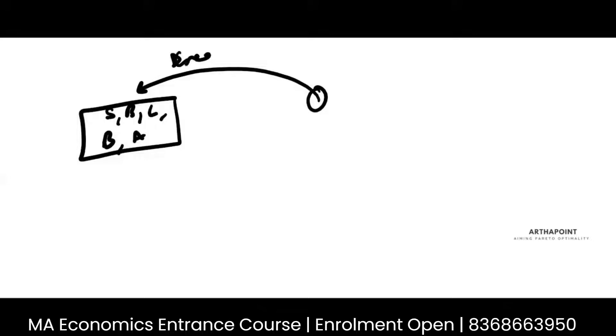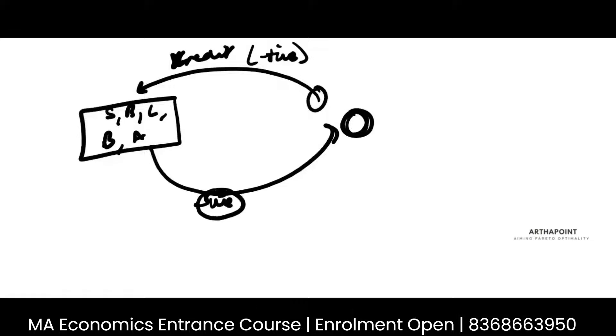Again, when foreigners come and buy from your country stock, bond, land, building, any other asset, then they are making a payment to your country. So that comes as a credit transaction. Money is flowing in. It's a positive transaction. But when you buy it in the foreign country, then it is a negative transaction.